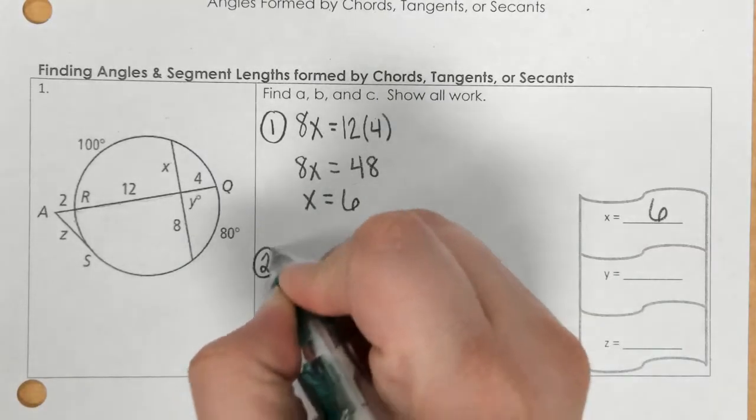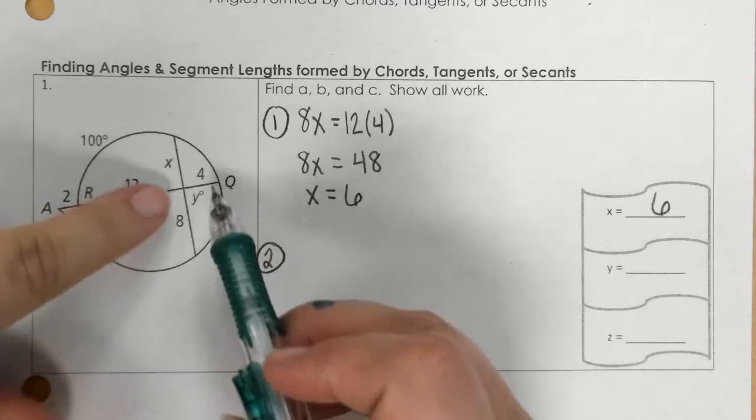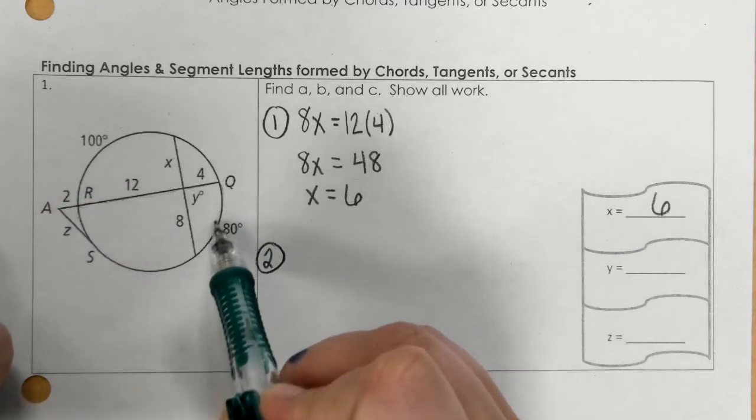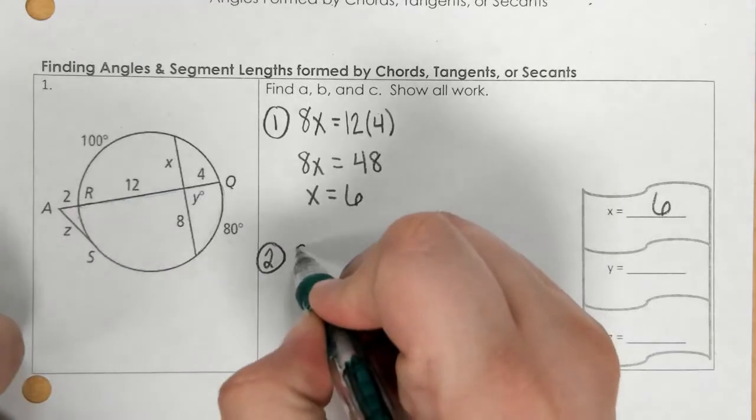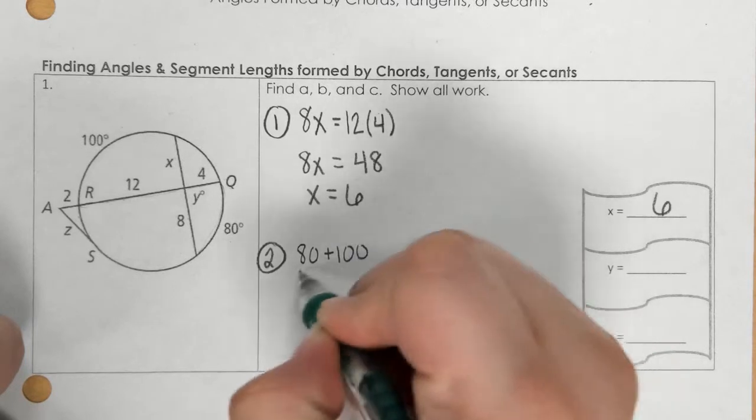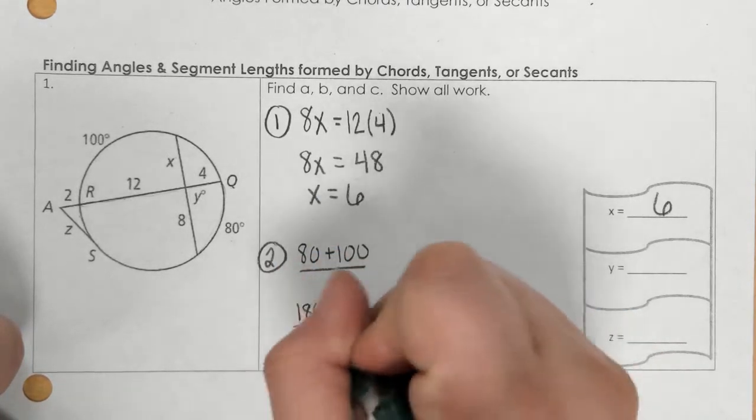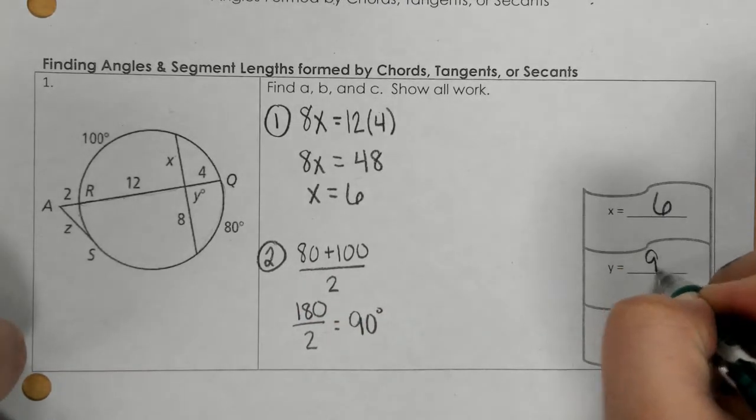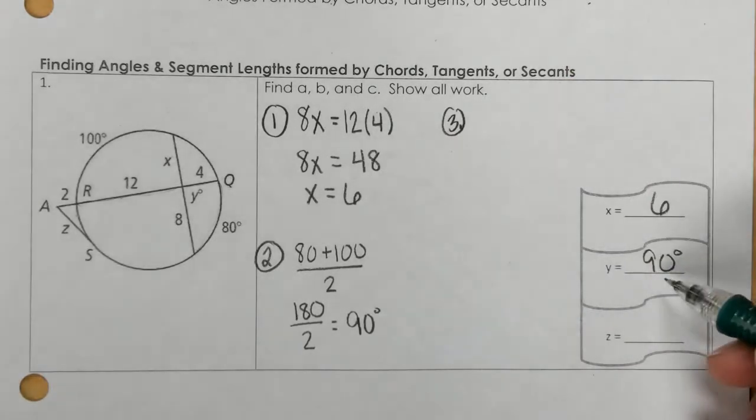The second one, let's go with letter y, finds an angle measure. This is the first thing that you learn in day 5. To get this angle right here, you have to add the two arcs, 80 and 100, and then divide that by 2. So my angle is 90 degrees.